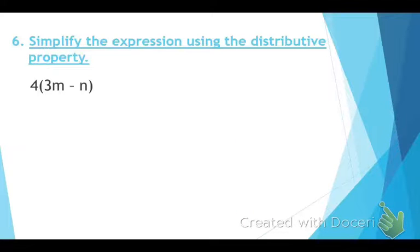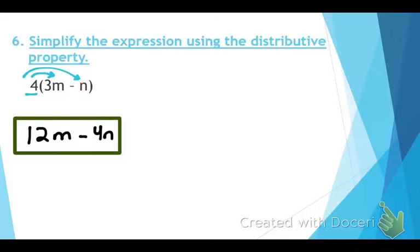Okay, so for this problem it says simplify the expression using the distributive property. Remember, distributive property is when you have a number on the outside and you have to multiply it by everything that you see on the inside. Guys, what's 4 times 3m? 12m. What is 4 times negative n? Negative 4n. Can I combine those two? No, because they are not like terms.